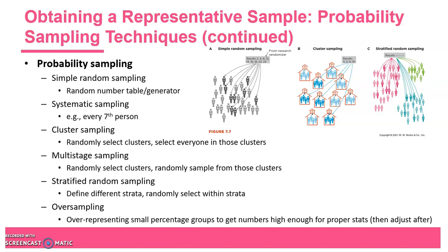Cluster sampling is where clusters — such as households, schools, or counties — are selected. When those clusters are randomly selected, everyone within them is sampled: everybody in that selected household, everybody in that county. Multi-stage sampling is similar, except instead of selecting everyone in a cluster, participants are randomly selected within those clusters — for example, randomly selecting three schools and then randomly selecting ten students at each of those schools.